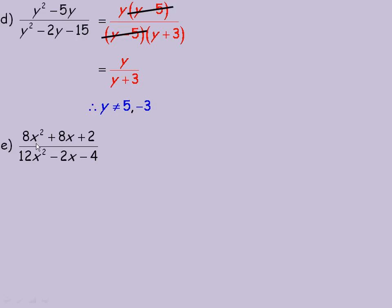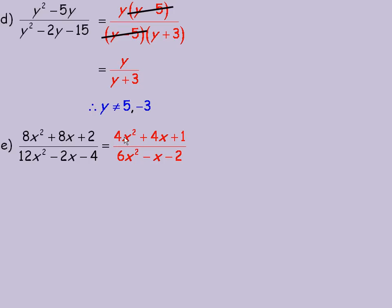Last example — notice in part e that the entire numerator and the entire denominator both divide evenly by 2. So we could just divide 2 out of all of this and write this in a simpler form to start with. Dividing everything by 2, it simplifies to 4x squared plus 4x plus 1 over 6x squared minus x minus 2. Now I need to factor this so I can divide out the common factors.